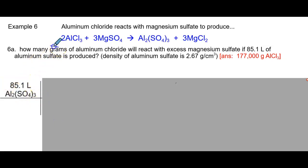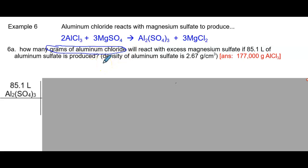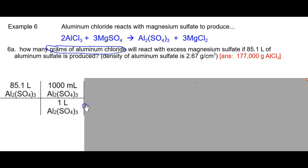We've got to get to grams of aluminum chloride. So we've got to get rid of liters. To get rid of liters, we're going to use density. Remember that density is our pathway between mass and volume. We can't use the balanced equation or the periodic table until we get to grams, so we must convert from volume to grams using density. We know that for every one liter, there are 1,000 milliliters.